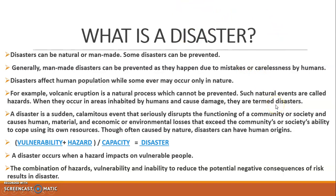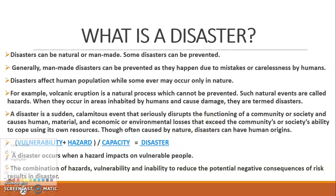If a natural event doesn't damage human settlements, we call it a hazard. So there is a difference between disaster and hazard: when there is loss of human life or human settlements, we call it a disaster. A disaster is a sudden calamitous event that seriously disrupts the functioning of a community or society and causes human, material, and economic or environmental losses that exceed the community's ability to cope using its own resources.